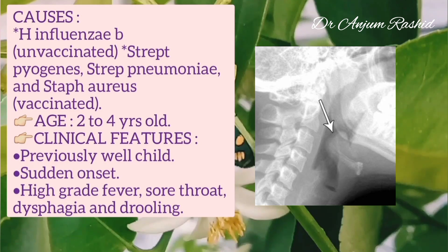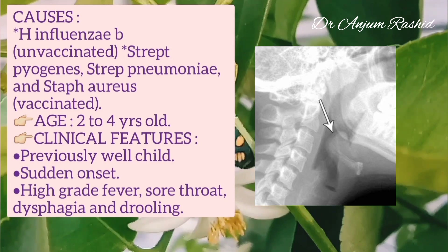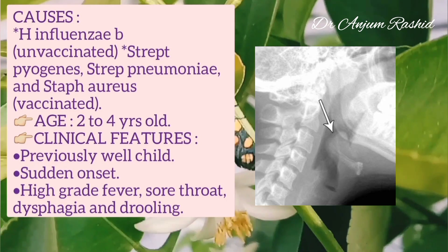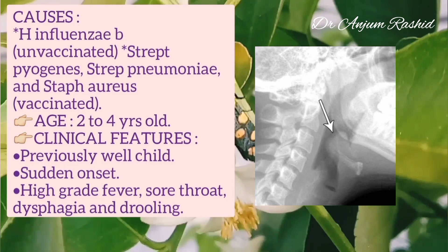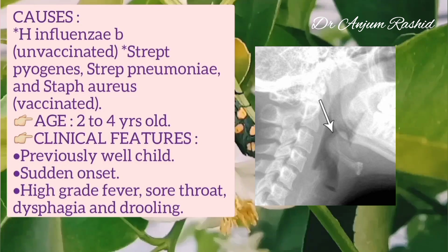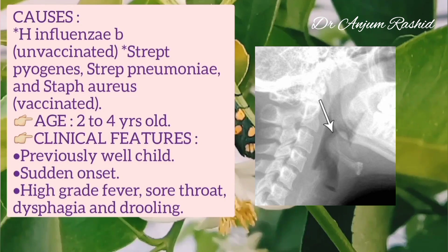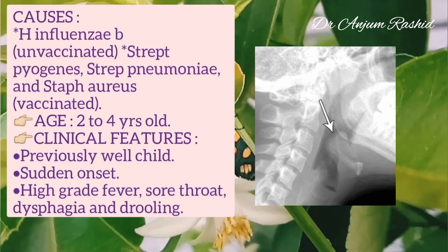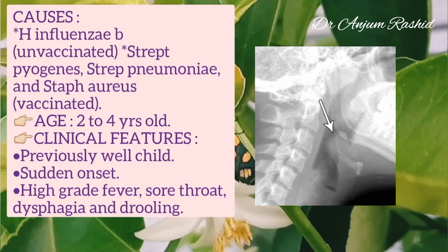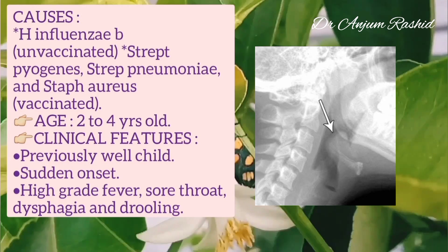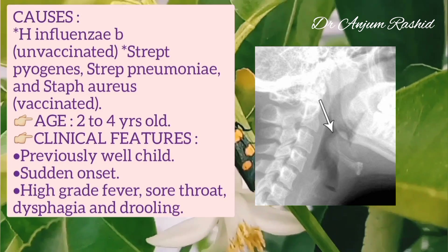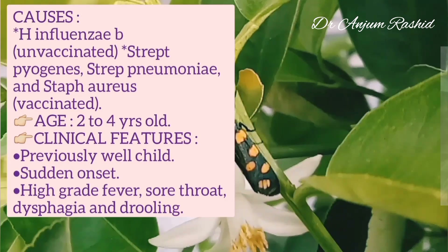Acute epiglottitis usually occurs in children 2 to 4 years of age. Clinical features: a previously well child has sudden onset of high-grade fever, sore throat, dysphagia, and drooling.